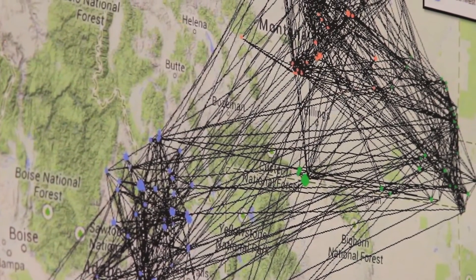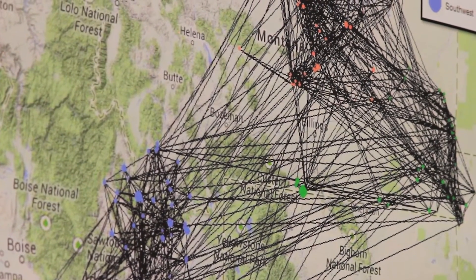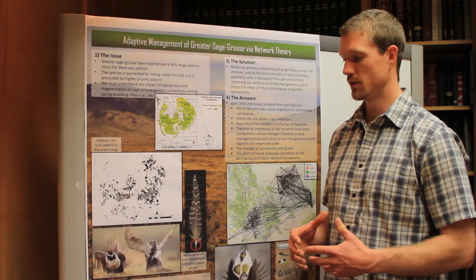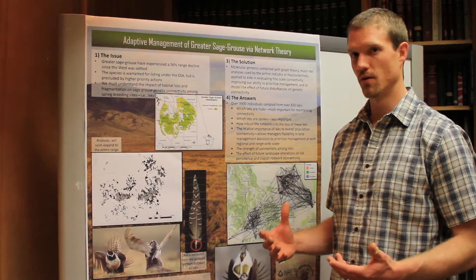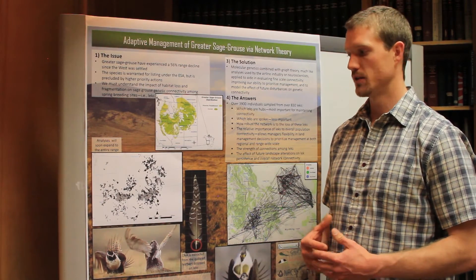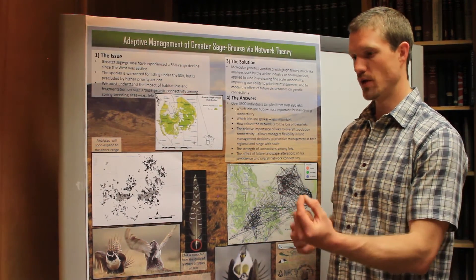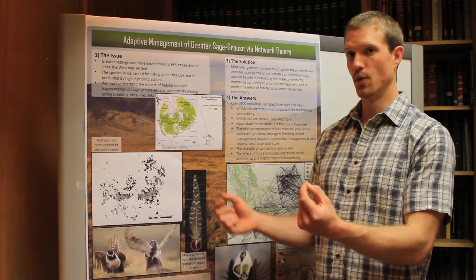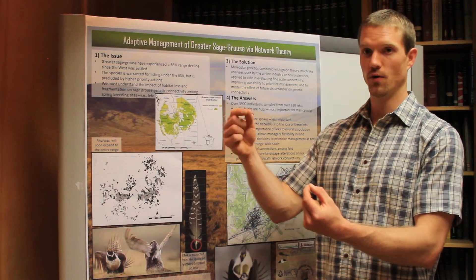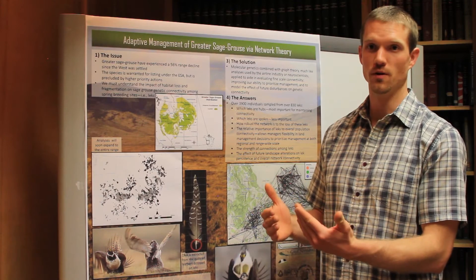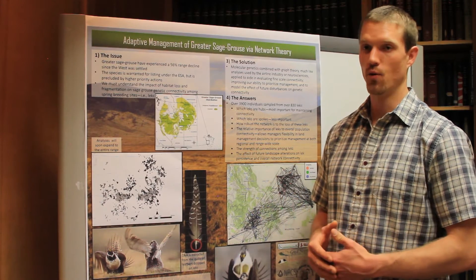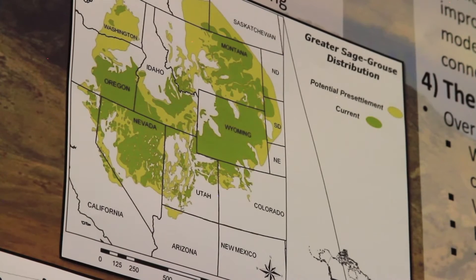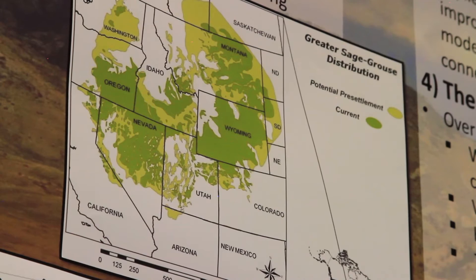We're using network theory or graph theory — the idea is to use the genetic information to construct a network of relatedness. So we can say, between these two leks, how related are they? Then bring a third one in — what's the interrelatedness between those three? At this point, we've run these analyses with somewhere around 380 leks.